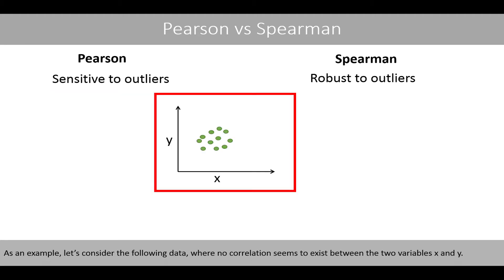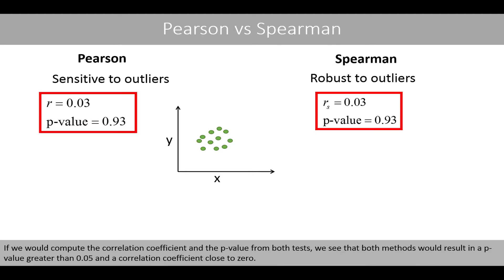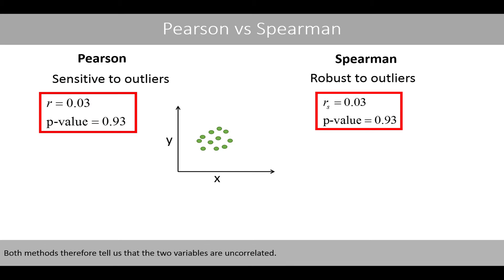As an example, let's consider the following data, where no correlation seems to exist within the two variables x and y. If we would compute the correlation coefficient and the p-value from both tests, we see that both methods would result in a p-value greater than 0.05 and a correlation coefficient close to 0. Both methods therefore tell us that the two variables are uncorrelated.